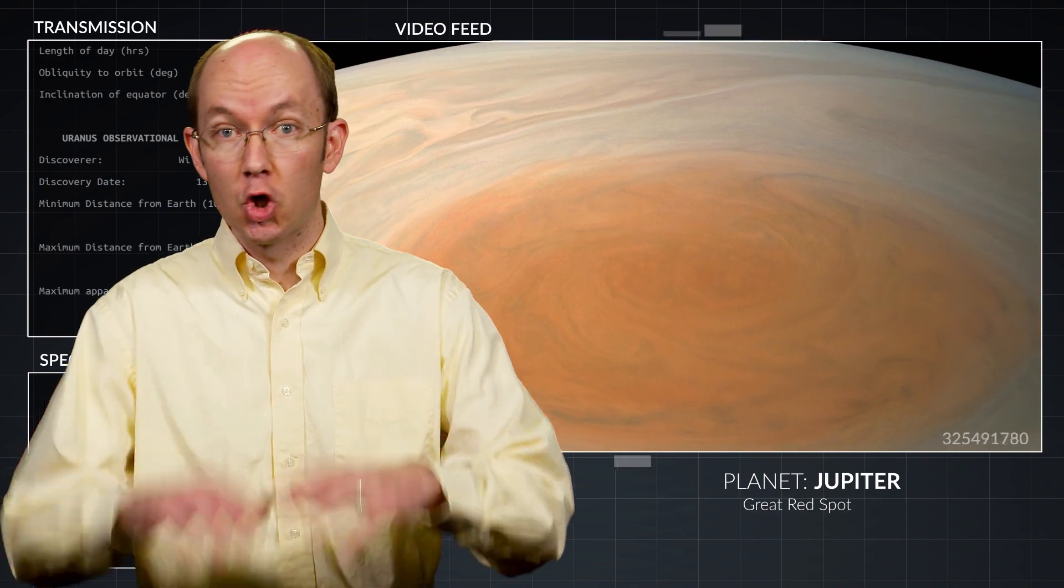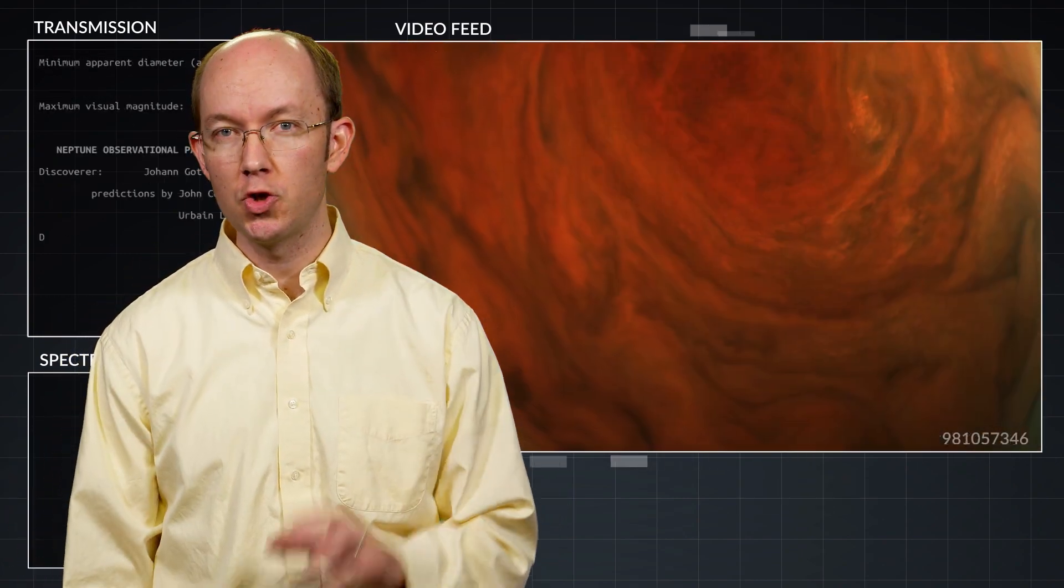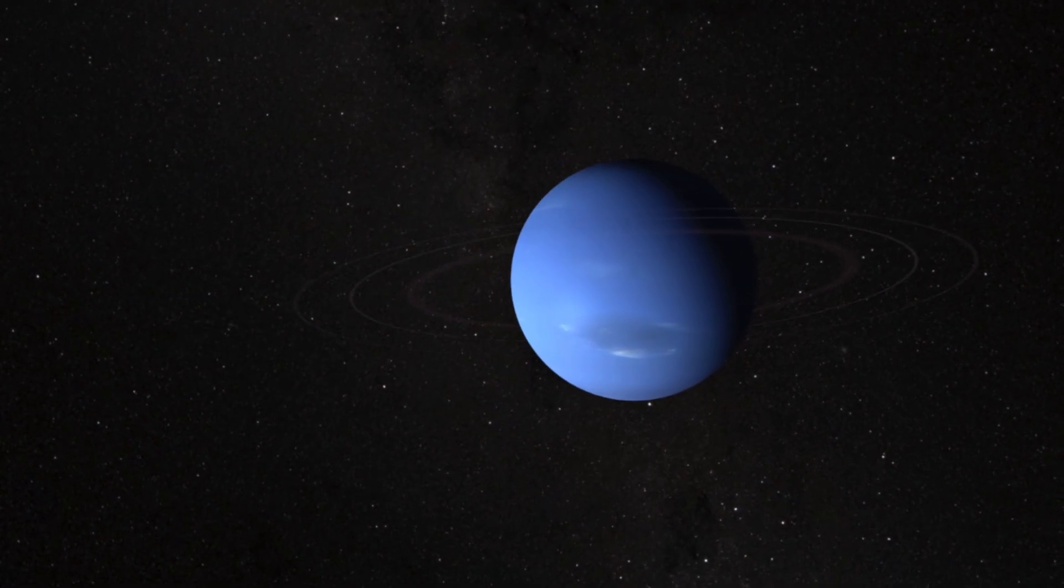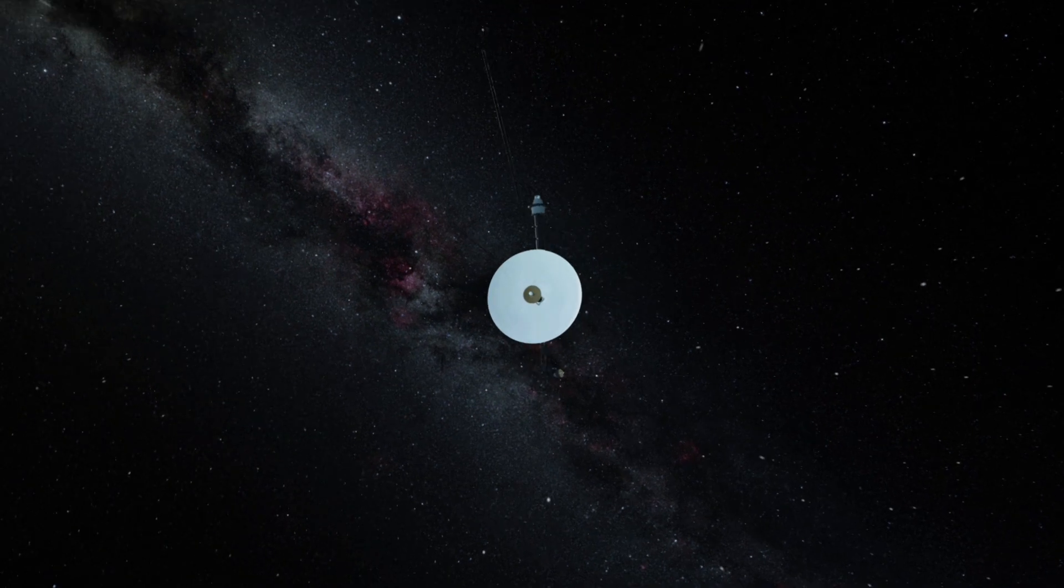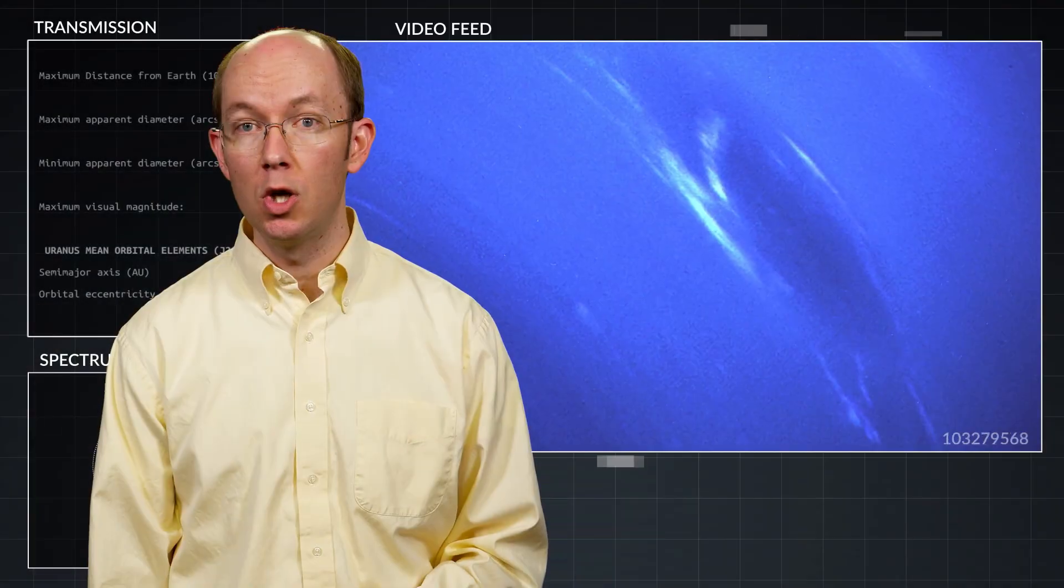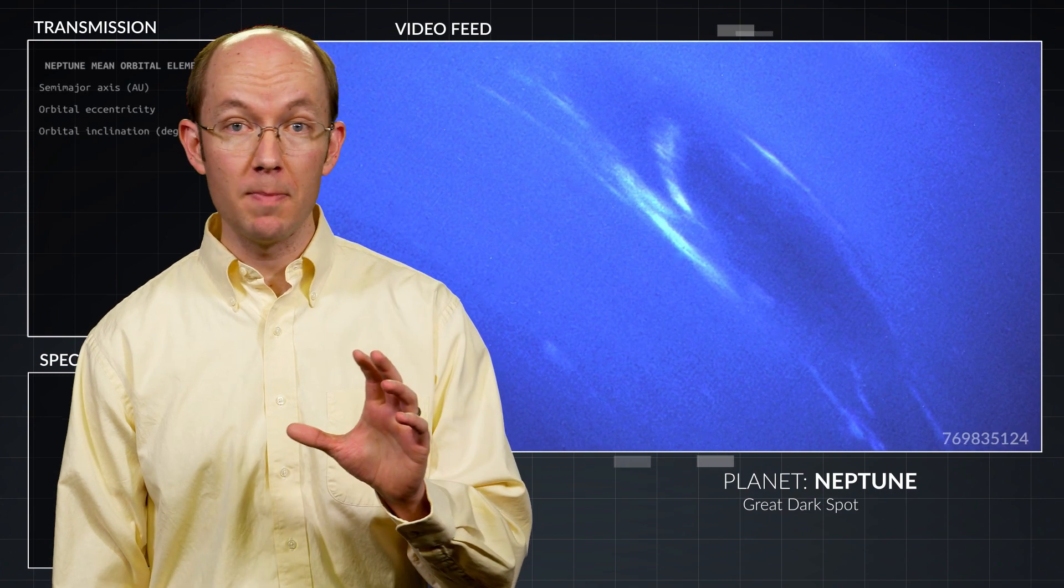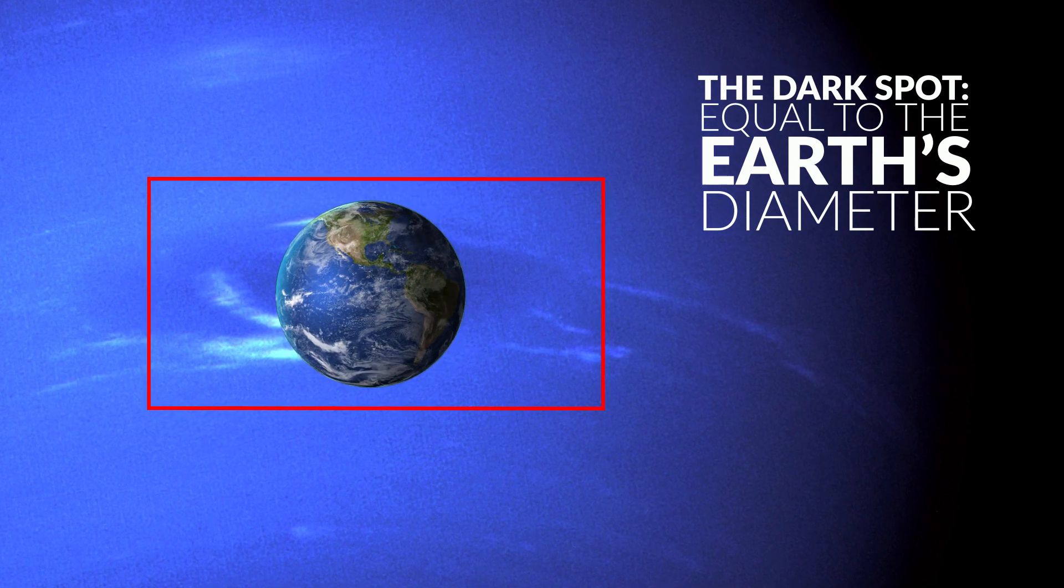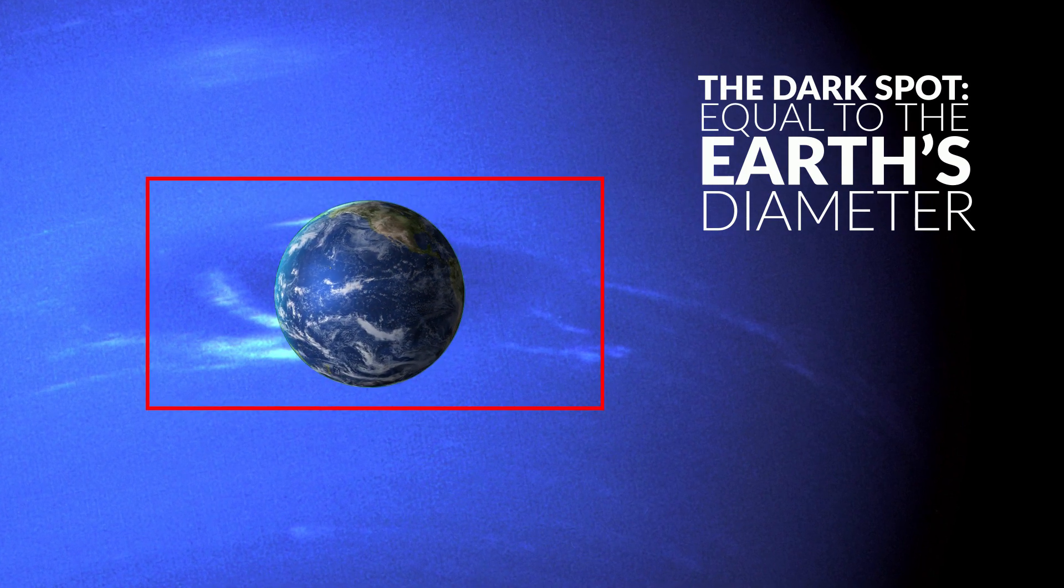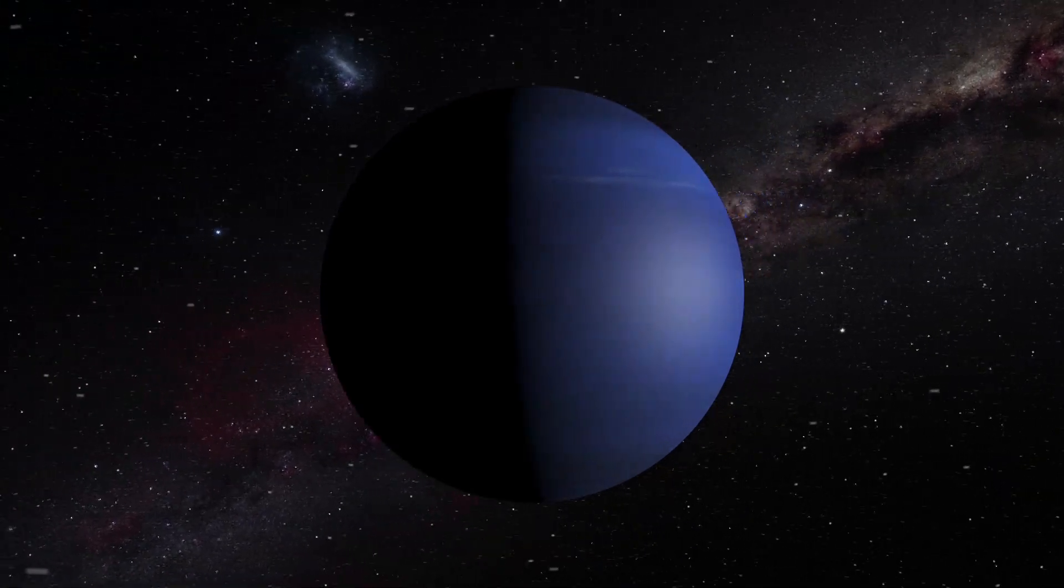Like Jupiter with its Great Red Spot, Neptune also has been observed to host a giant storm. One such storm, observed by the Voyager 2 space probe in 1982, was named the Great Dark Spot. This storm had a size equal to Earth's diameter. In contrast to the persistence of Jupiter's large storm, Neptune's Great Dark Spot has since disappeared.